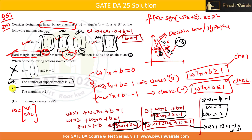So the support vectors are the points that actually lie on the ±1 hyperplanes: points (2,0) and (0,2) lie on the +1 plane, and point (0,0) lies on the −1 plane. That gives us three support vectors. Point (2,2) lies on the class 1 side but not on the boundary plane, so it is not a support vector. Option B — number of support vectors is 3 — is correct.